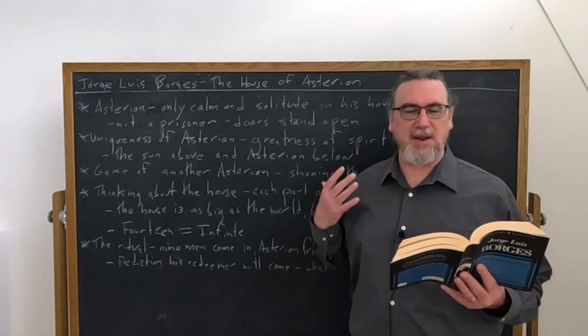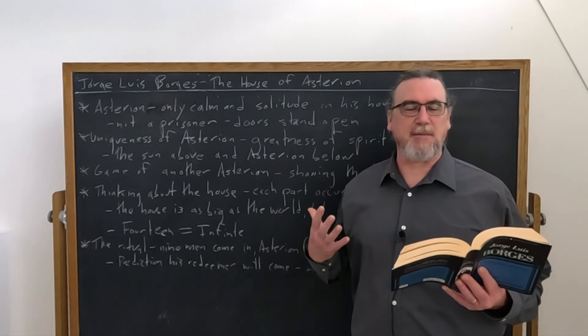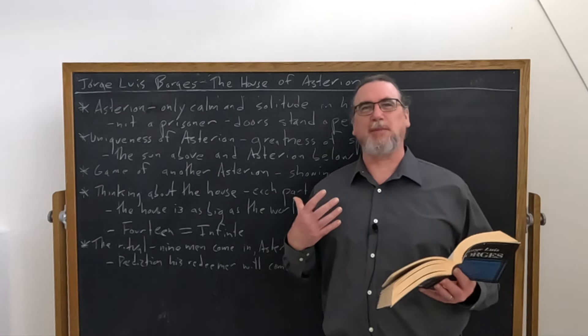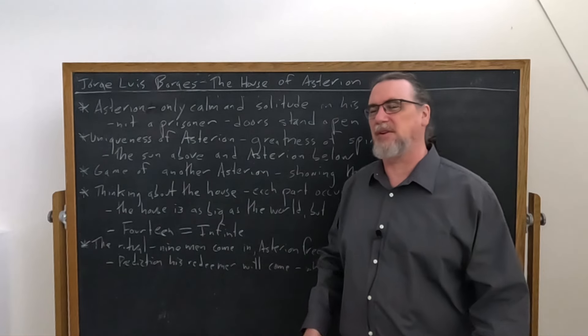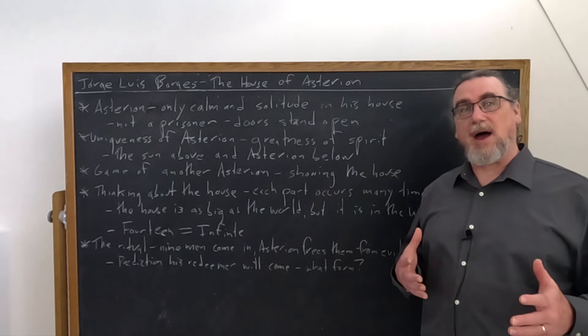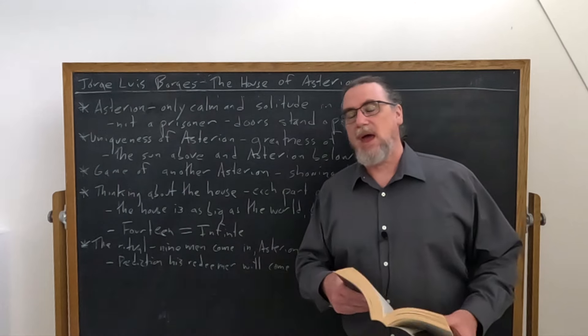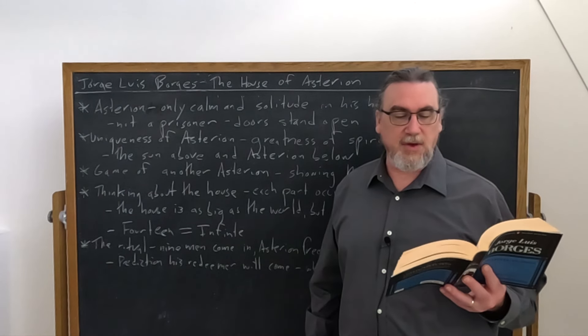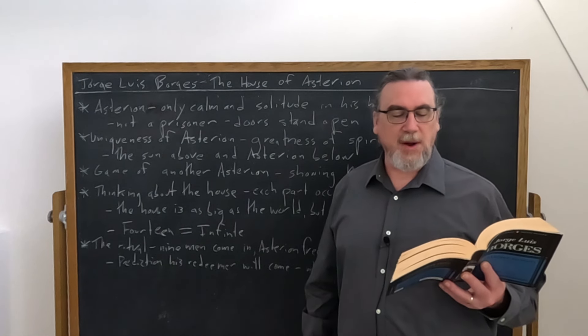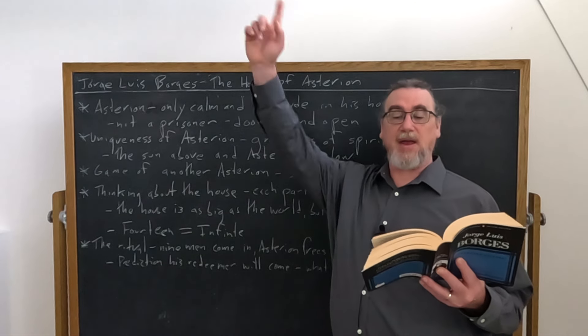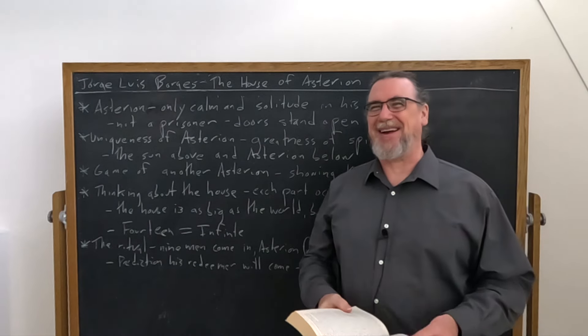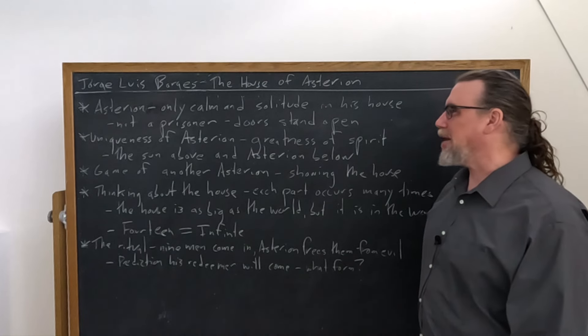That Asterion actually considers himself to have great spirit means it makes sense why would I learn to read? A generous impatience has prevented me from that. Vexatious and trivial minutia find no refuge in my spirit. Later on, he's going to suggest that everything is repeated in the universe except for two things. On high, the intricate sun. And below, Asterion.